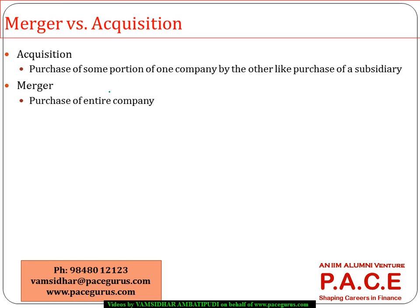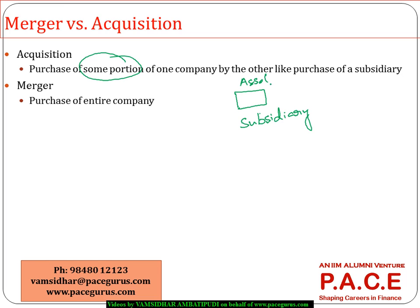Whenever we talk about a merger versus an acquisition, there is a difference between the two words. Whenever I am trying to acquire or purchase some portion of a company — not the entire company — it could be one business unit, one subsidiary, or some specified assets of the company. Whenever such things are being taken over, we call that an acquisition.